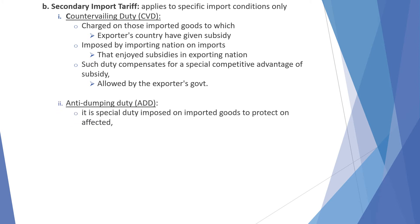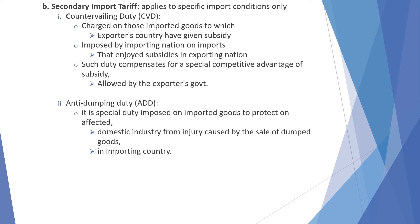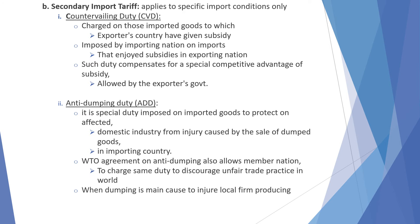Next is anti-dumping duty, which is a special duty imposed on imported goods to protect the affected domestic industry from injury caused by the sale of dumped goods in the importing country. The WTO agreement on anti-dumping allows member nations to charge the same duty to discourage unfair trade practices when dumping is the main cause of injury to local producers. When a tariff is temporary, it is called a tariff surcharge.